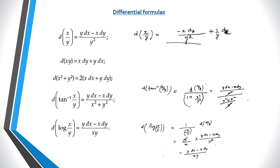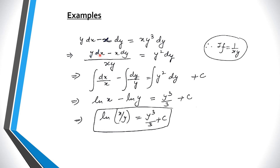Now let's look at some examples. We are given y dx minus x dy equals xy cubed dy, and we have to solve this differential equation. We have the form y dx minus x dy. We need to find the integrating factor so it becomes a complete differential. On the right-hand side, we integrate with respect to y only, so there should be a function of y alone — x should be removed. We take x and y and divide them over, so the integrating factor will be 1 over xy.